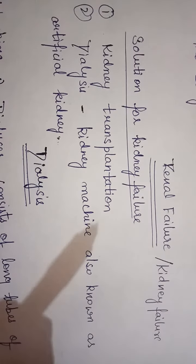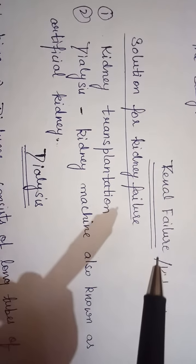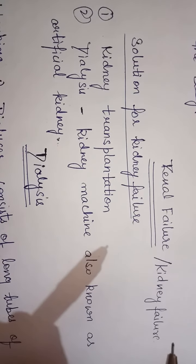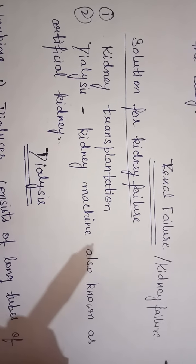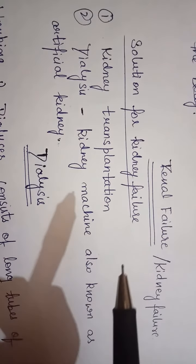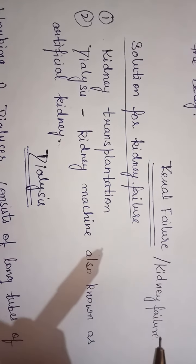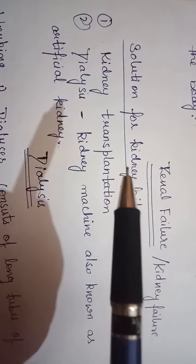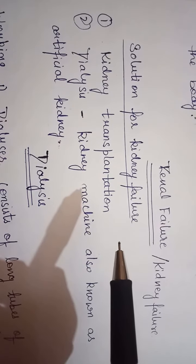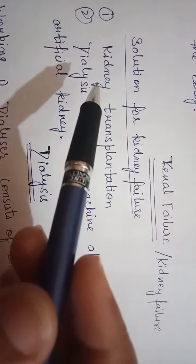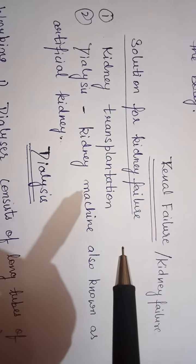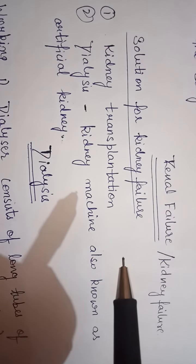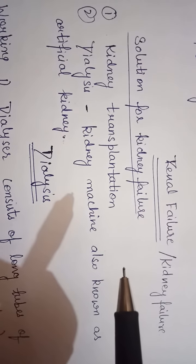Next is related to renal failure, which means kidney failure — when kidneys stop working. When kidneys are not able to filter the blood, what is the solution? There are two options: first, kidney transplantation, where a kidney can be transplanted from a healthy donor.